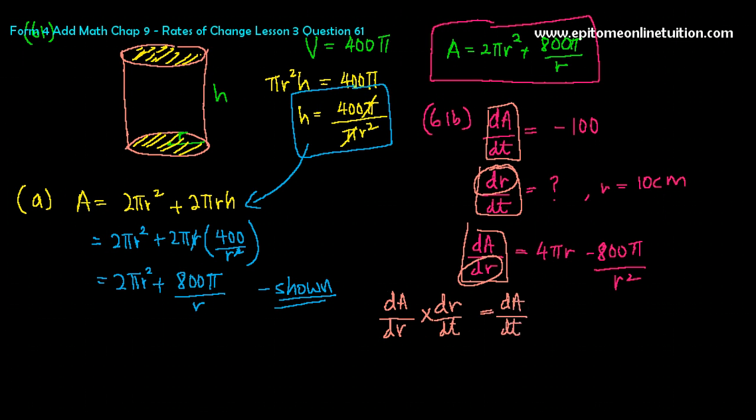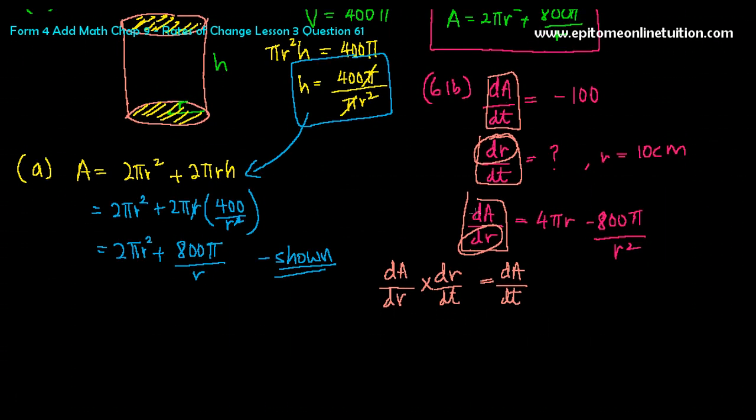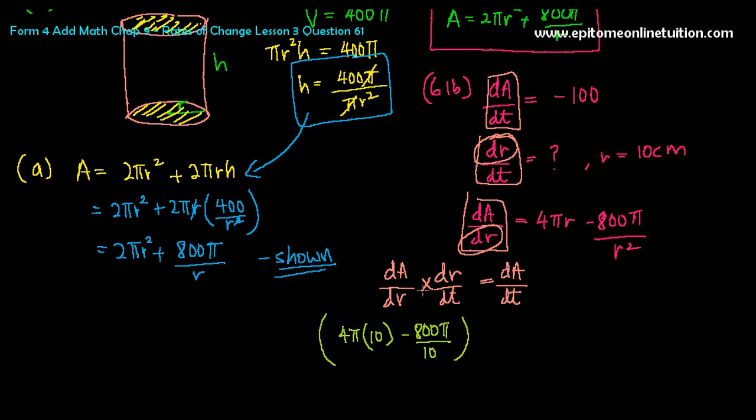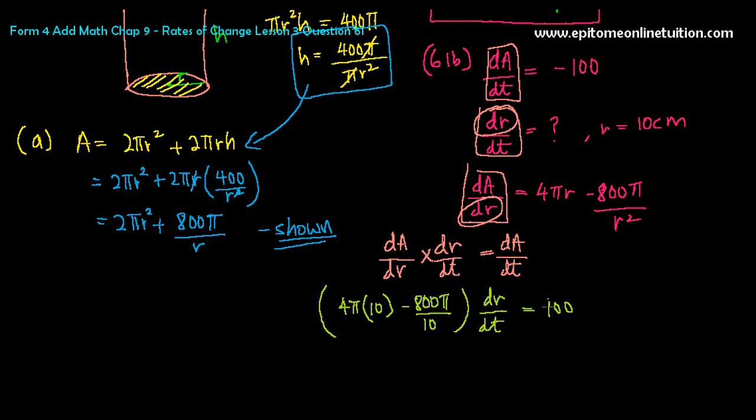Now substitute the things inside carefully. You should be able to get your answer without any problem. dA/dr is 4πr - you can straight away put it when r is 10. That's 4πr minus 800π over r is 10. That's for dA/dr. Put a big bracket, times dr/dt, which is your unknown, equals to dA/dt, which is 100. So count this first and then shift it over to get 100 divided by whatever answer you get over here. I noticed there's a small mistake here. That's 100 because this is r² over here, so this should be 100.